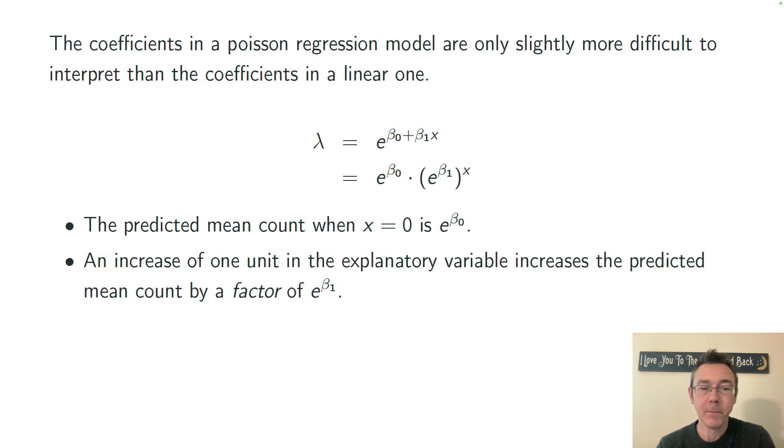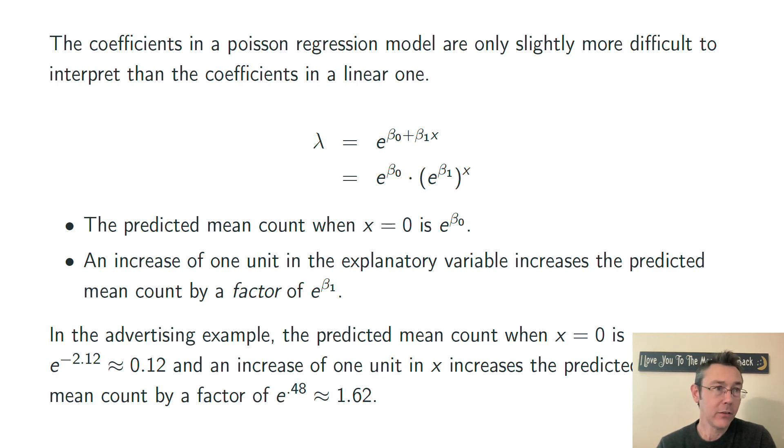Similarly, looking at beta 1, beta 1 is telling us that an increase of one unit in the explanatory variable is going to increase the predicted mean count by a factor of e to the beta 1. So in linear regression it tells you how much you add each time. Here it's telling you the factor, and you have to remember there's that exponential there as well. In the advertising example, the predicted mean count when x is 0 is e to the negative 2.12, that's about 0.12. And an increase of one unit in x increases the predicted mean count by a factor of e to the 0.48 or 1.62.